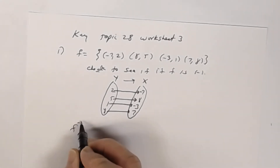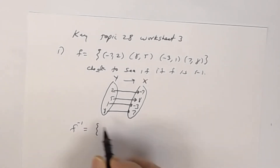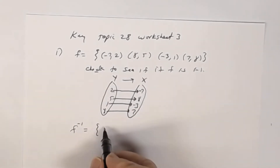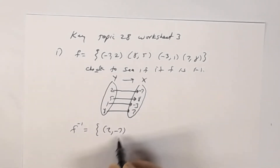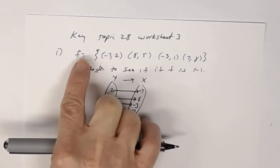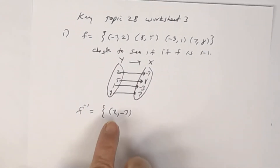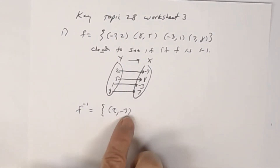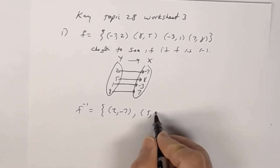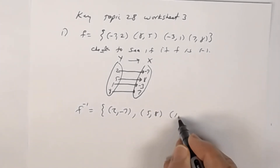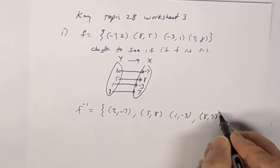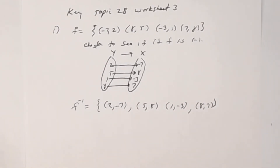Since it's one-to-one, it has an inverse. To find the inverse, all you do is interchange the coordinates. So (-7, 2) becomes (2, -7). If (-7, 2) is a point on function F, then (2, -7) is a point on the inverse. (8, 5) becomes (5, 8); (-3, 1) becomes (1, -3); and (7, 8) becomes (8, 7). And that's all they want you to do for number one.